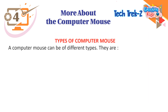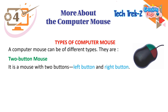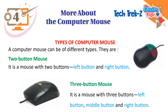Types of Computer Mouse. A computer mouse can be of different types. They are: Two Button Mouse — it is a mouse with two buttons, left button and right button. Three Button Mouse — it is a mouse with three buttons: left button, middle button, and right button.